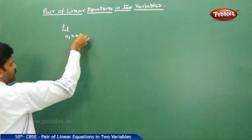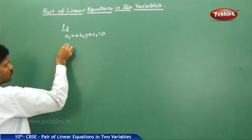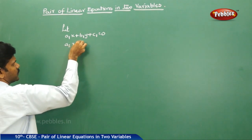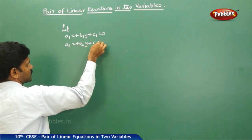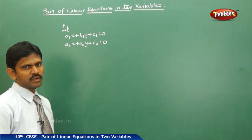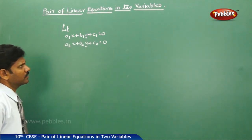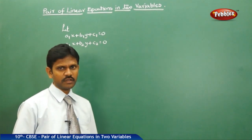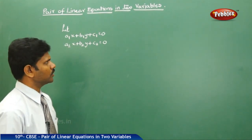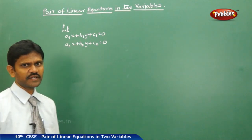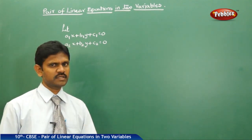Let A1x plus B1y plus C1 equal 0 and A2x plus B2y plus C2 equal 0 be two linear equations. Then immediately three different cases we can arrive at. These three different cases are distinct — that is, one is different from the other — that is, three possibility cases.